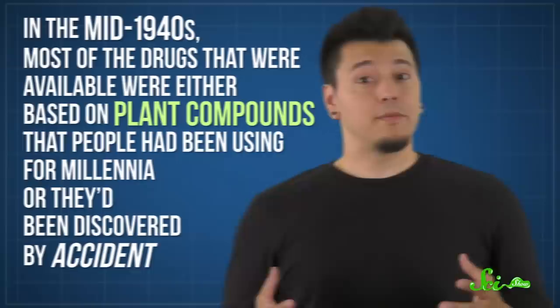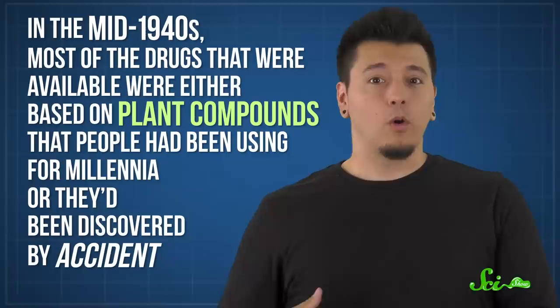See, in the mid-1940s, most of the drugs that were available were either based on plant compounds that people had been using for millennia, like aspirin, or they'd been discovered by accident, like penicillin. But Elion and Hitchings wanted to take a more deliberate approach.